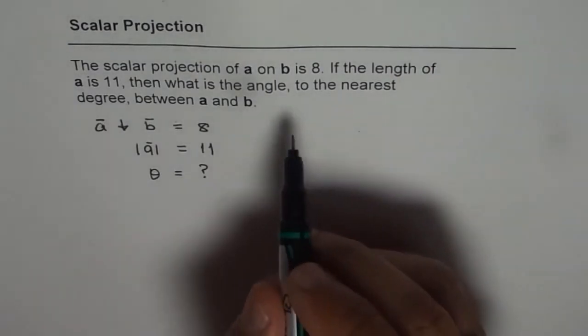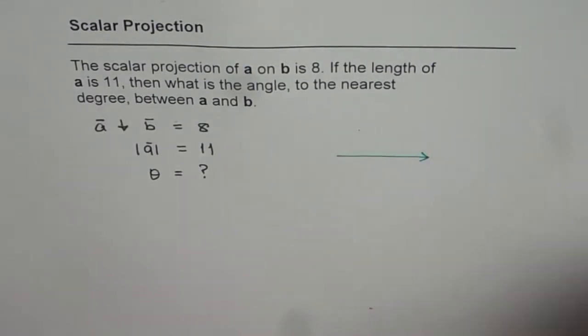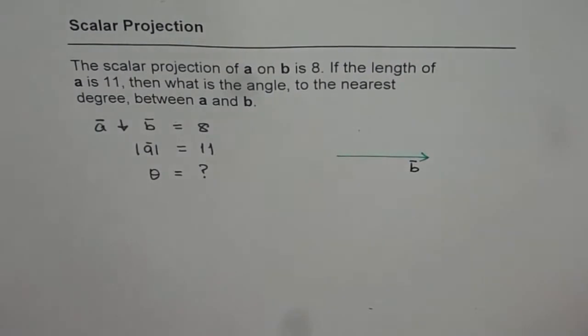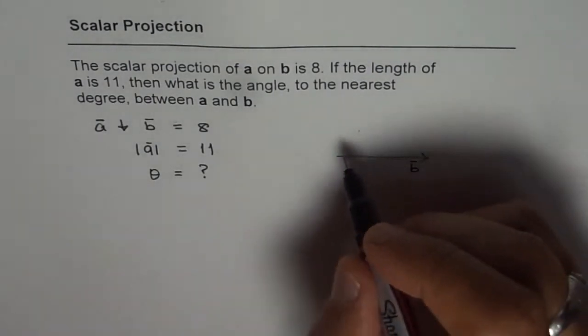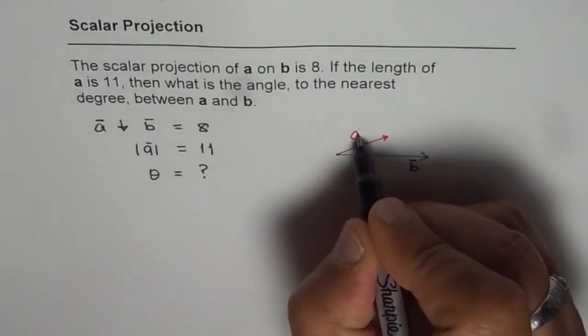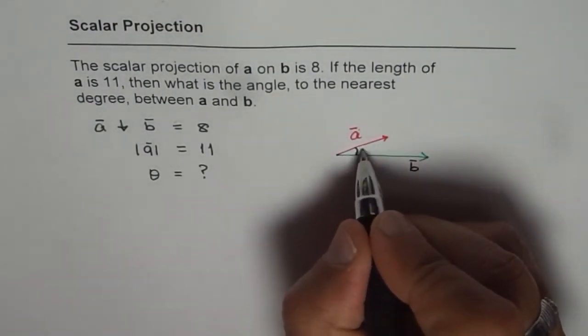It is a good idea to sketch and we will sketch B along the horizontal line. So we say let this be our vector B. Now vector A is at an angle of theta. So this is our vector A. And let us assume this angle to be theta which we need to find.